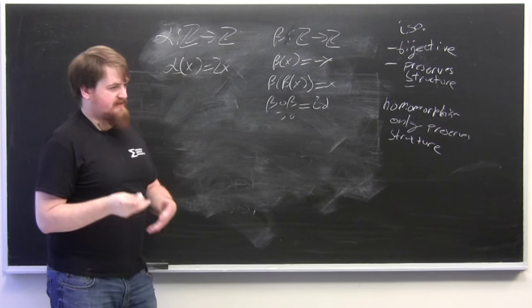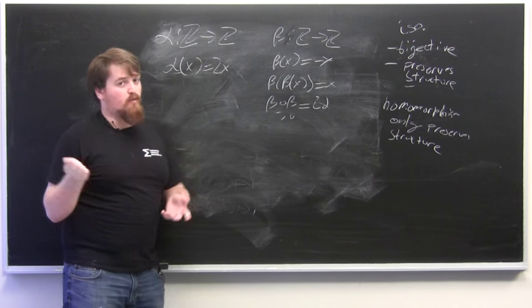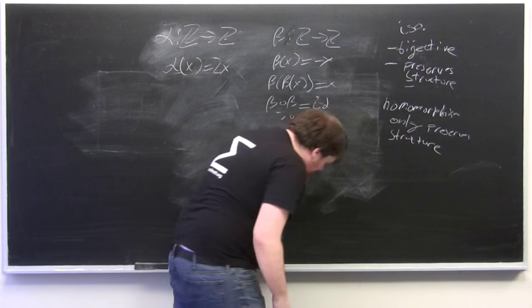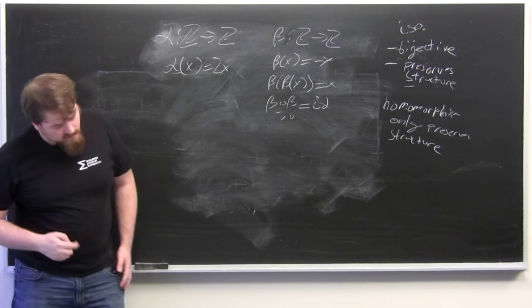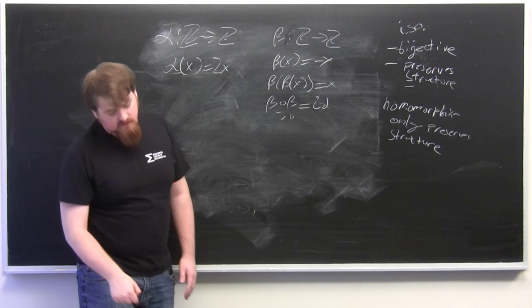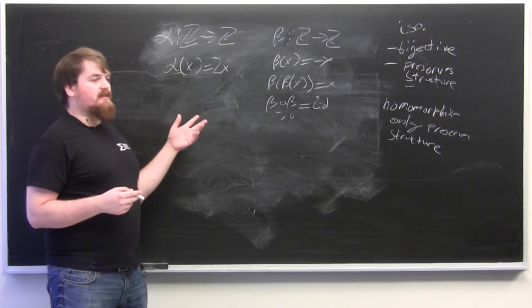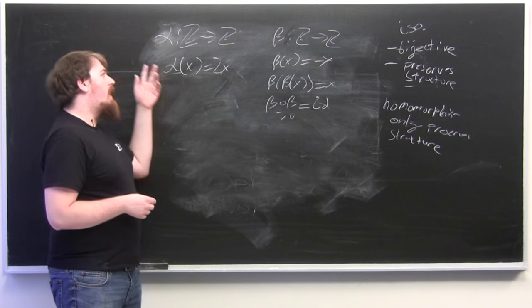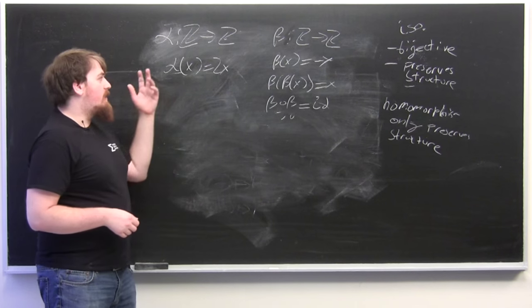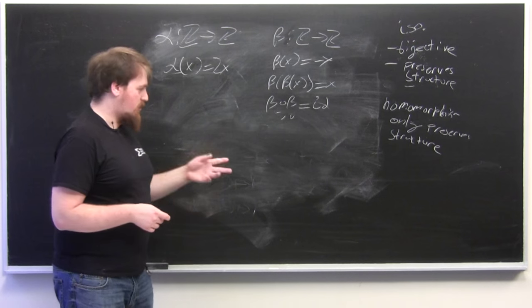Beta composed with beta is the identity transformation but you can't have an inverse for alpha that's one half x because that would send one to one half which isn't in Z. So a homomorphism that has the same domain and co-domain group is called an endomorphism and a homomorphism which is an isomorphism and an endomorphism is called an automorphism.